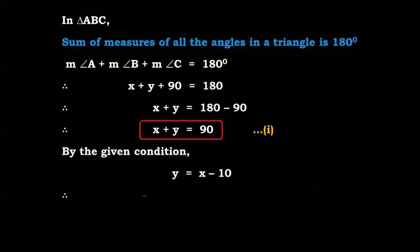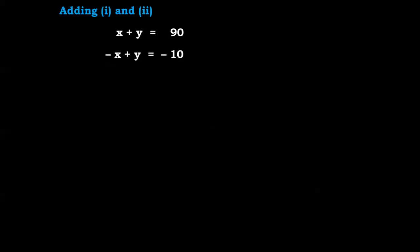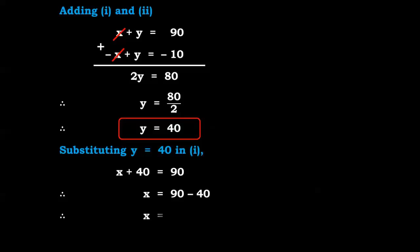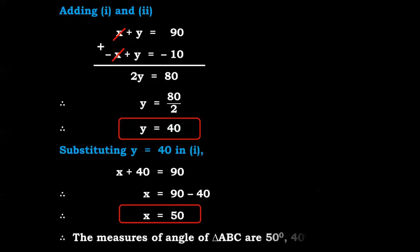Adding equations 1 and 2: x + y + (-x + y) = 90 + (-10), the x terms cancel, giving 2y = 80, so y = 40. Substituting y = 40 in equation 1: x + 40 = 90, therefore x = 50. The angles of triangle ABC are 50 degrees, 40 degrees, and 90 degrees. Remember to use the property that the angle inscribed in a semicircle is a right angle.